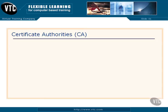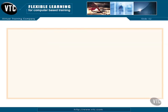Let's talk about certificate authorities, because these are the things that tend to confuse people the most on these exams and just in real life. Certificate authorities are quite simply the servers that generate the certificates and hand them out. There are two types, and they're going to ask you about these on the exam: a standalone CA and an enterprise CA.